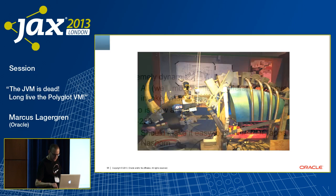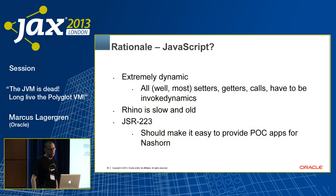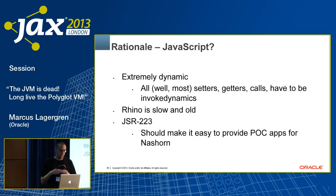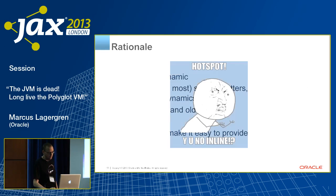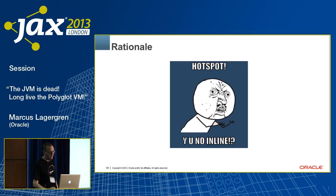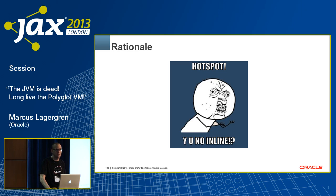We picked JavaScript because it's extremely dynamic, so it would really put invokeDynamic and the java.lang.invoke mechanisms to a test — almost all getters, setters, and calls have to be invokeDynamics if you implement JavaScript as bytecode. Rhino is slow and old, and it should be easy to write proof-of-concept apps because you have the JDK to fall back on through the scripting API. We bumped into a lot of VM problems — Hotspot wasn't really prepared to optimize invokeDynamic call sites when we started. We worked closely with the JIT compiler team to make sure this new kind of bytecode actually runs fast.